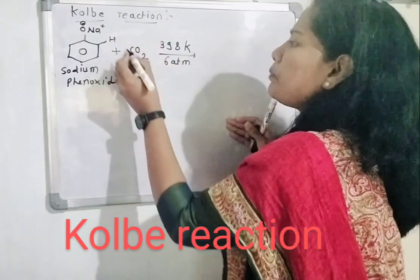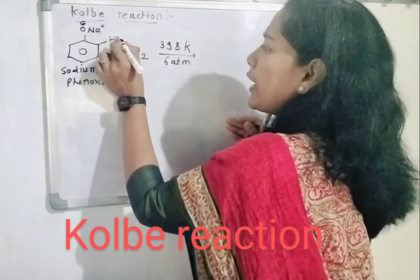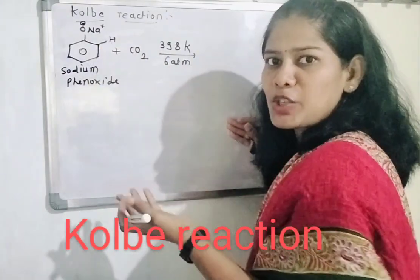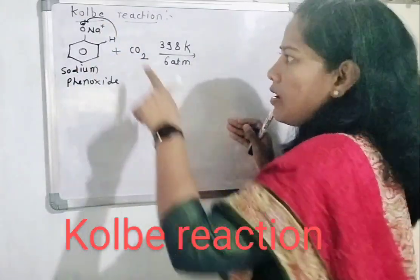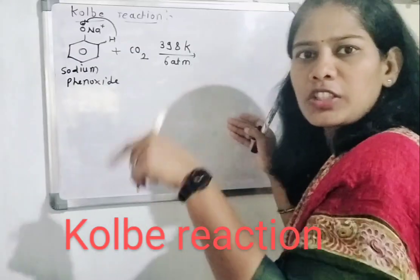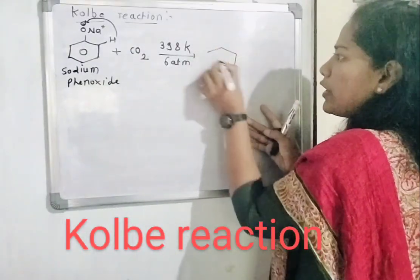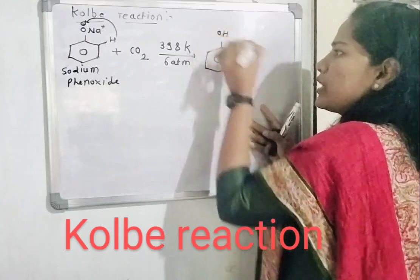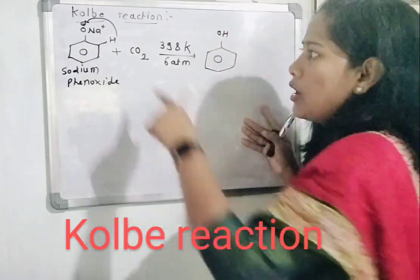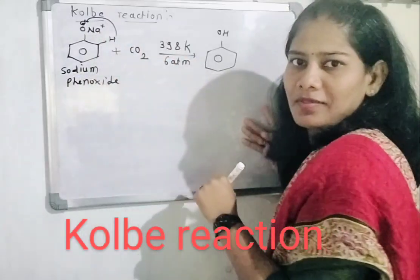So here what happens? First of all, attack of this hydrogen. The rearrangement - attack of this hydrogen towards the oxygen atom. Hydrogen goes on, oxygen goes on. What happens? Now we have benzene ring, oxygen which contains hydrogen here, and sodium remains.